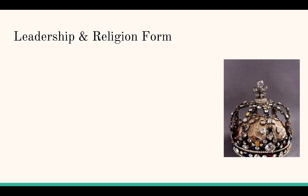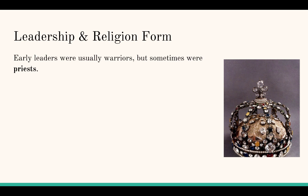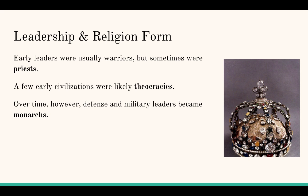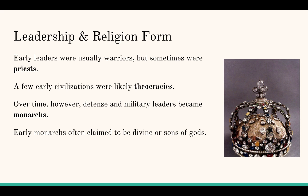When leadership and religion form, early leaders were typically warriors but sometimes priests. Most early civilizations likely started as theocracies, where religion is government — religious law is the law, and religious leaders run the city. Over time, defense and military became more important, and individuals began taking over government, becoming the first monarchs, kings, emperors, and princes. To maintain power and pass it to their children, early monarchs claimed to be divine or sons of gods, using religion to support their position.